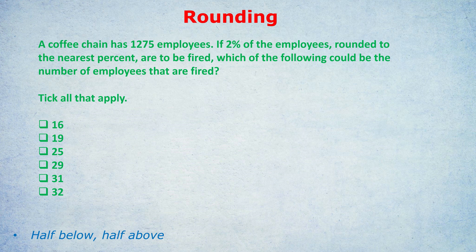A lot of my students get the minimum right but then struggle with the maximum. Many would say the minimum is 1.5%, which is correct, because 1.5 rounds to 2 — if we went any lower it would round to 1. So 1.5% is the lowest possible actual percentage. But for the highest, students might say 1.9, 2, or even 2.4, and all of those are wrong.